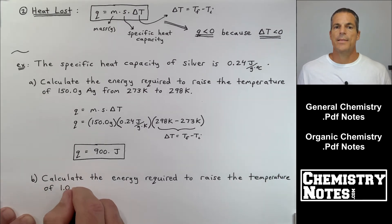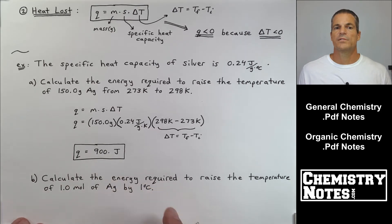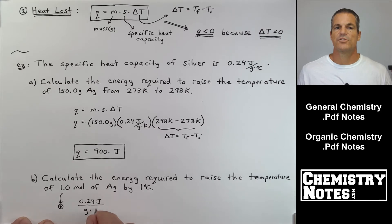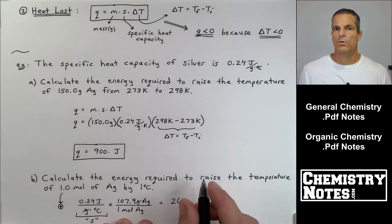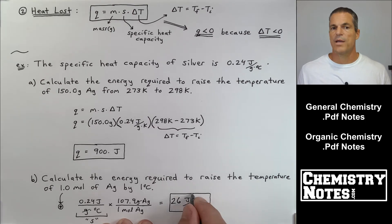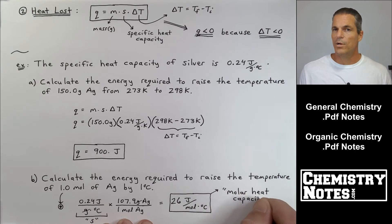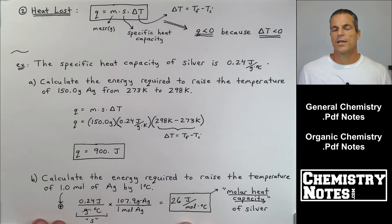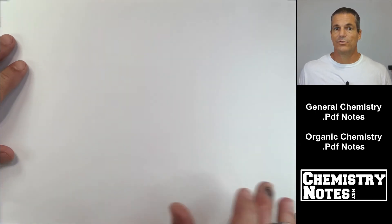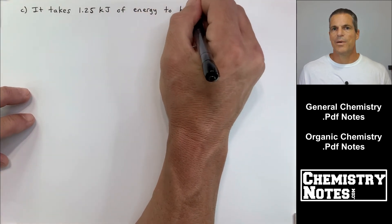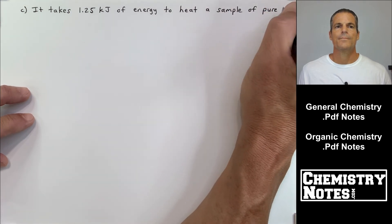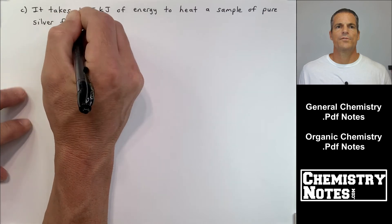Part B: calculate the energy required to raise the temperature of one mole of silver by one degree Celsius. Specific heat capacity is in joules per gram per Celsius, so we convert from grams to moles using the atomic mass of silver from the periodic table. The result is 26 joules per mole per Celsius. This is actually called molar heat capacity, though it appears less frequently than specific heat capacity in most courses.